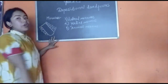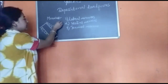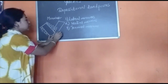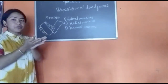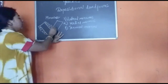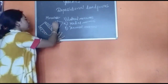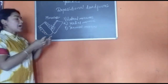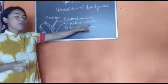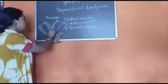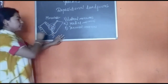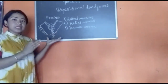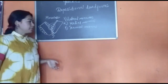Now, what is a medial moraine? When two glaciers come towards each other and merge, the sediments accumulated in the middle of these two glaciers are known as medial moraines. This is the medial moraine — the moraine which gets deposited in the middle of two glaciers.